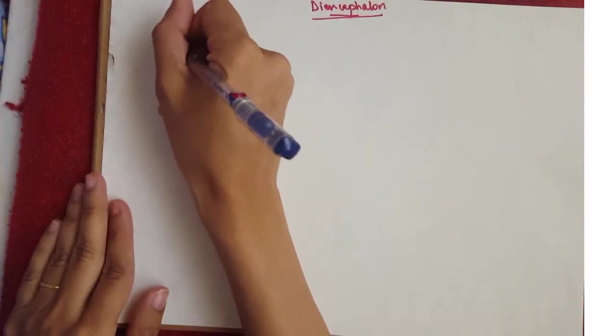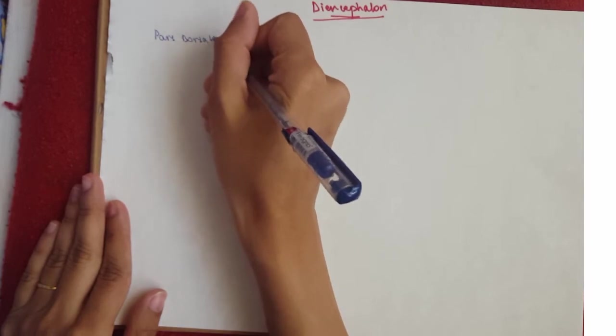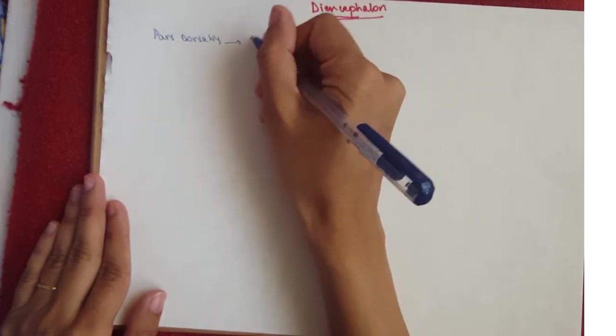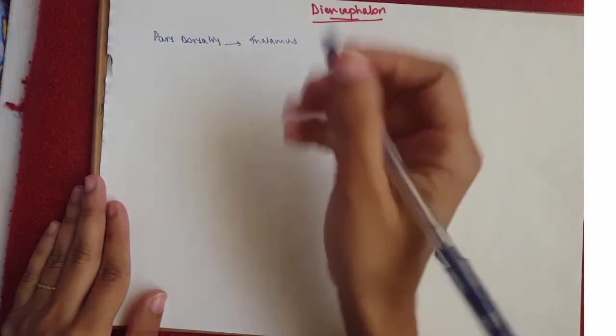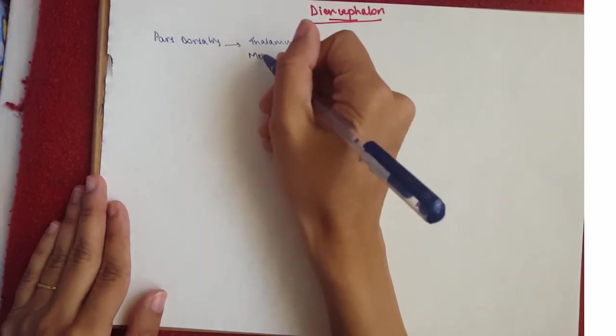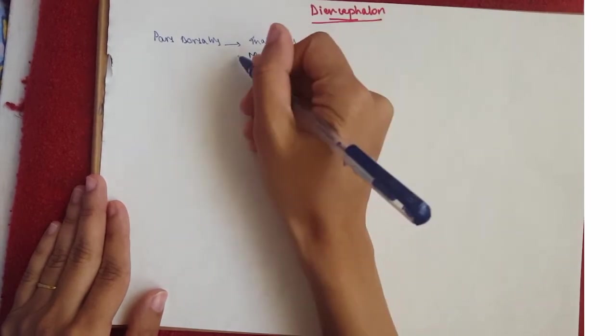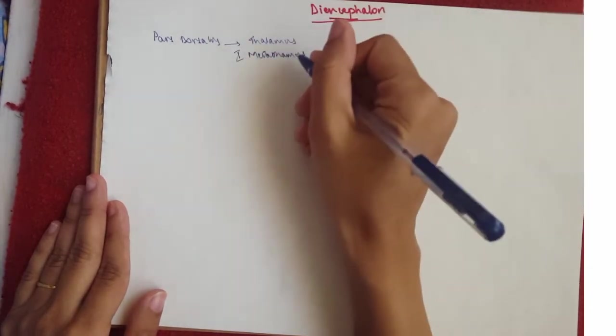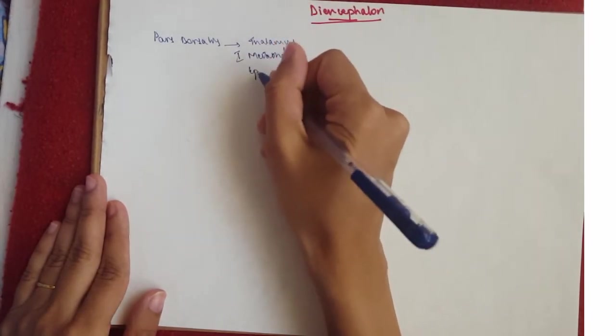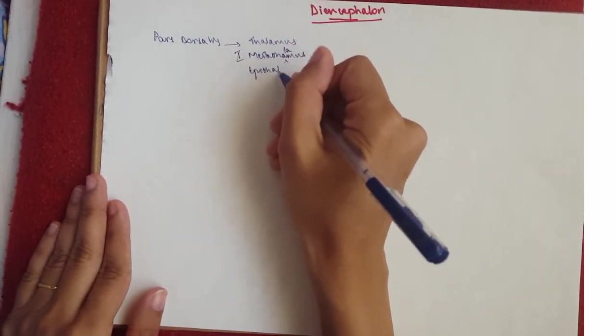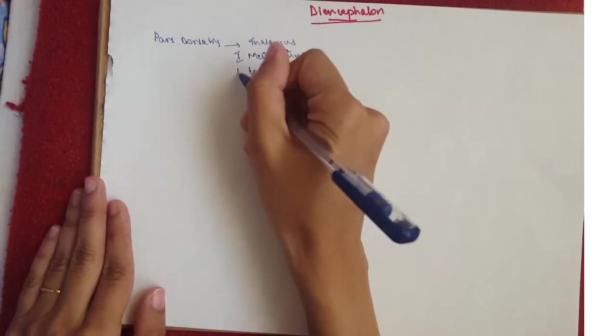Now the pars dorsalis consists of the thalamus, which is also known as the dorsal thalamus, the metathalamus, which I'm going to write here. So metathalamus is great. Then we've got the epithalamus, which I'm going to put as number two.